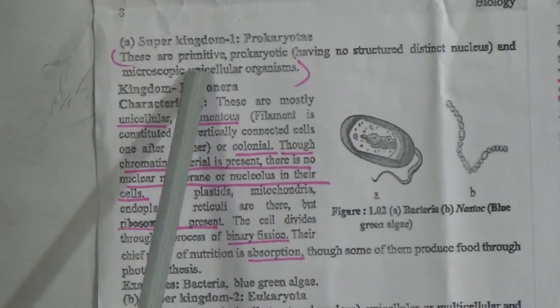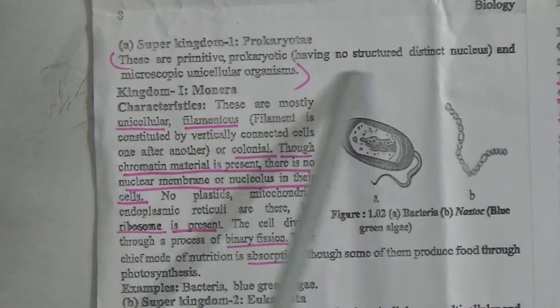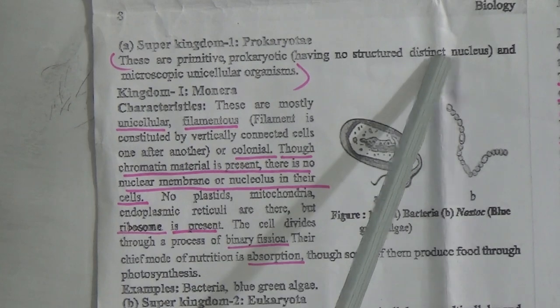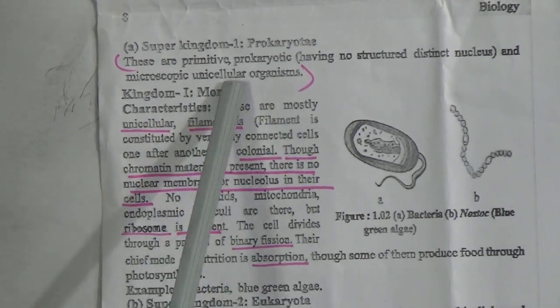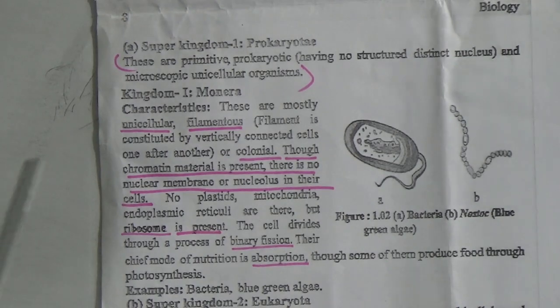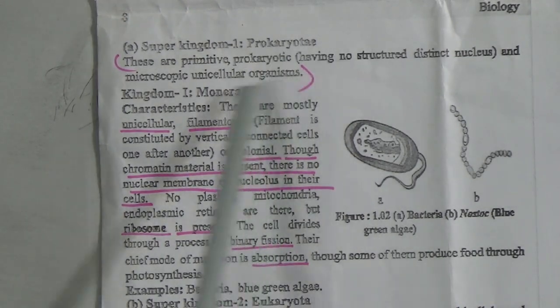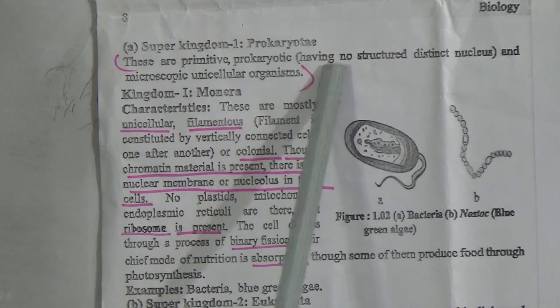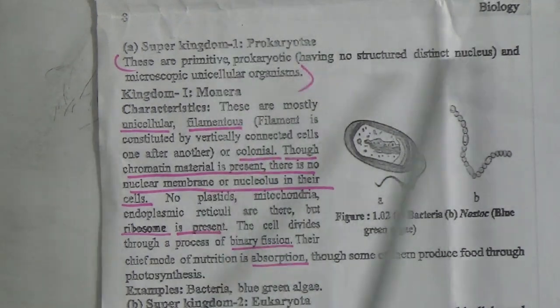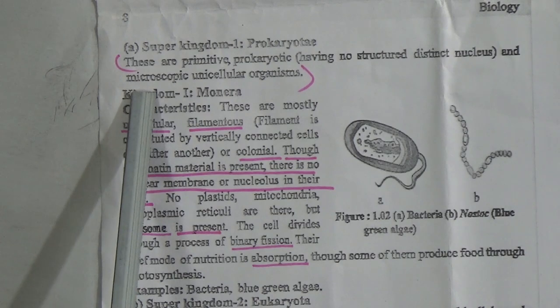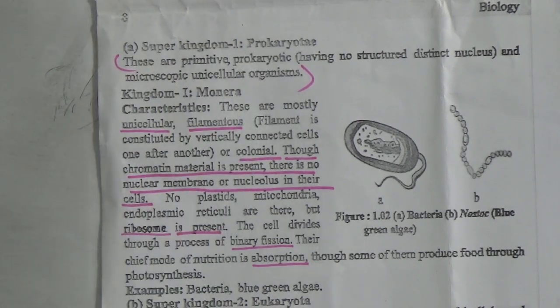Super Kingdom 1, Prokaryota: these are primitive prokaryotic organisms having no well-structured, distinct nucleus — they are microscopic and unicellular. Kingdom 1 is Monera. Prokaryota means they have no well-structured nucleus and they are very microscopic, primitive and prokaryotic organisms.